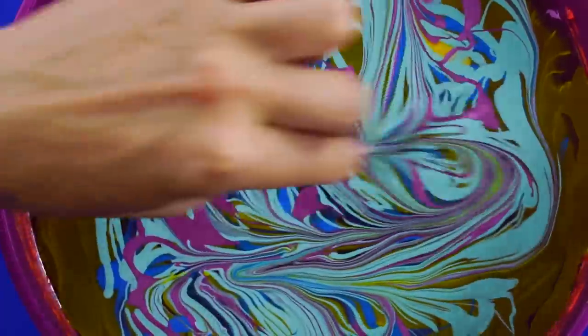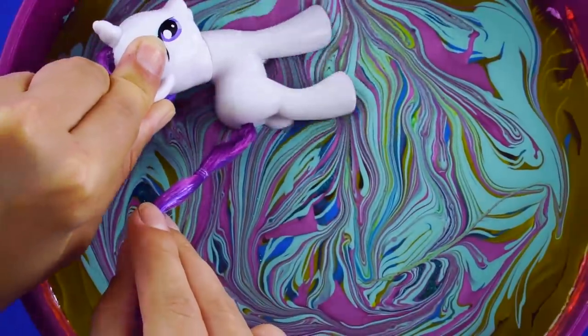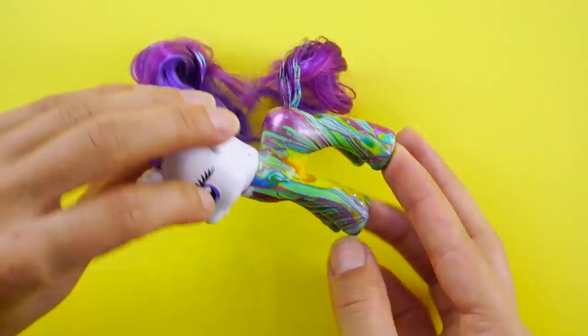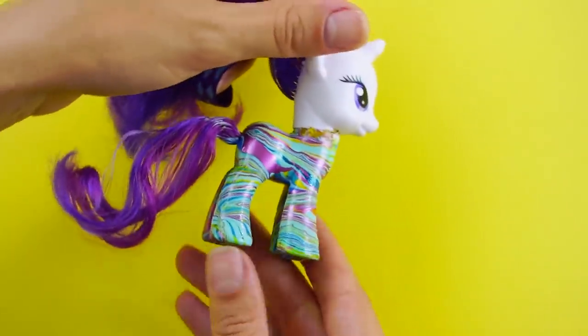Swirl together with a toothpick. Hold pony's mare and tail up and slowly dip her into the mixture, being careful not to dip in her hair. Check out that colorful pony.